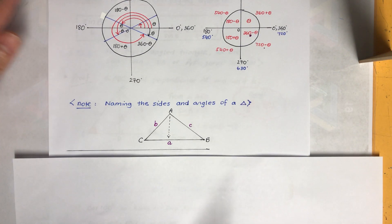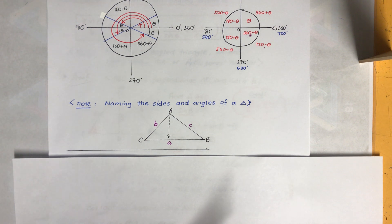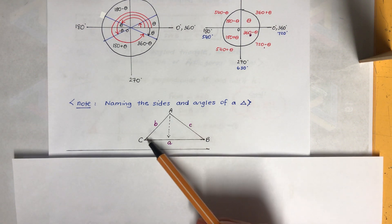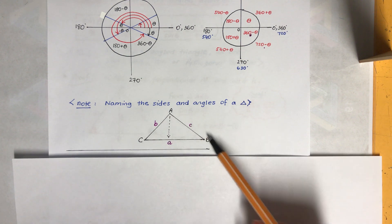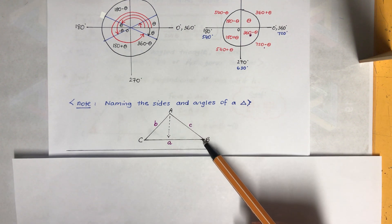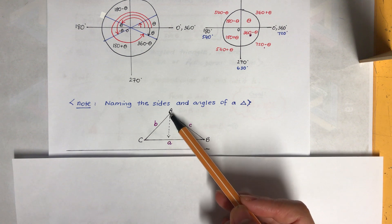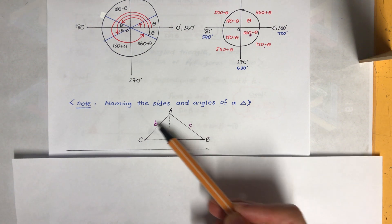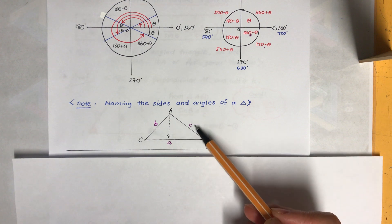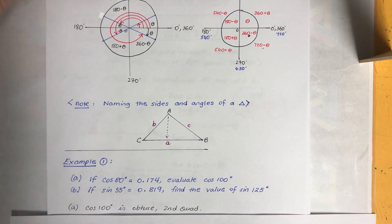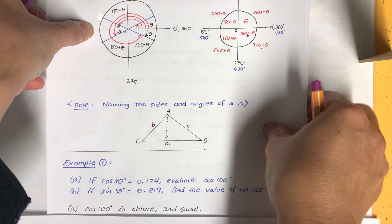Just before we start the examples, let's look at naming the sides and angles of a triangle. When we name vertex corner angles, we use capital letters A, B, C. The side opposite to each angle is written with the corresponding small letter. Remember that.